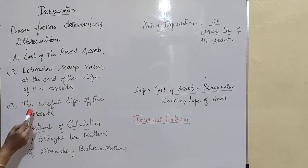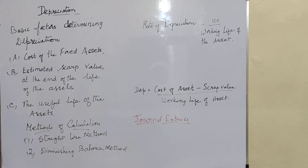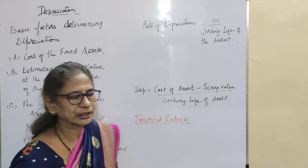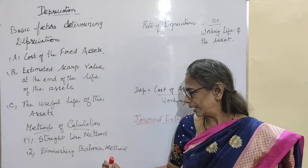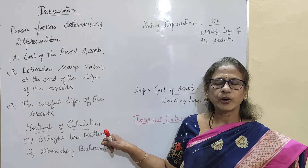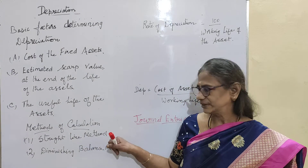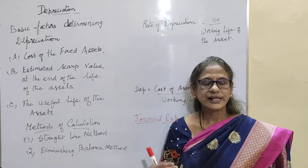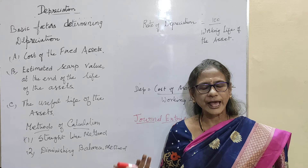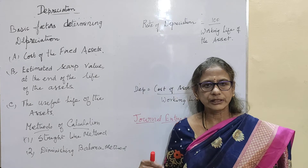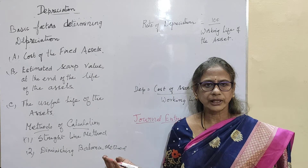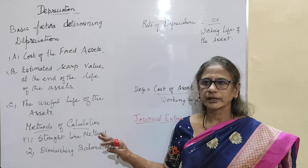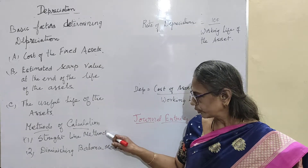The next factor is the estimated scrap value and the useful life of the asset — meaning the working period of the asset. The methods of calculating depreciation include the straight line method, the diminishing balance method (also called reducing balance method), the sinking fund method, the annuity method, and the insurance method. However, we are focusing only on the straight line method and the diminishing balance method here.